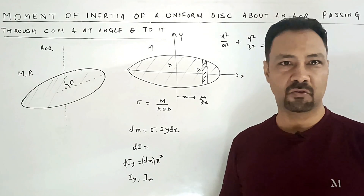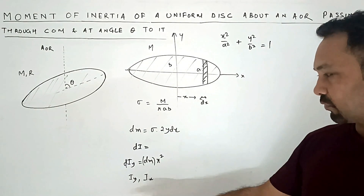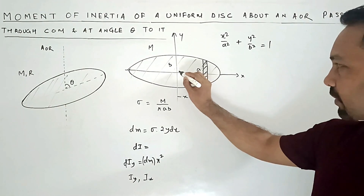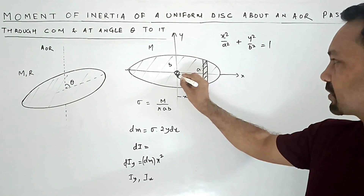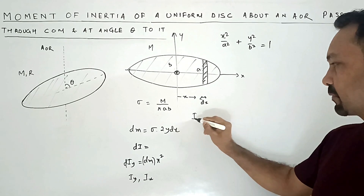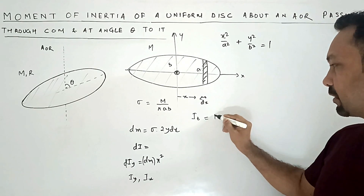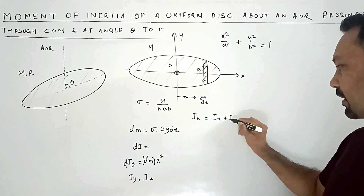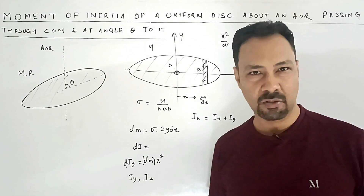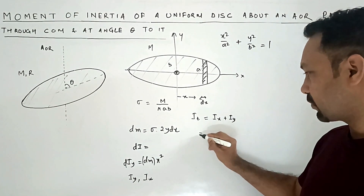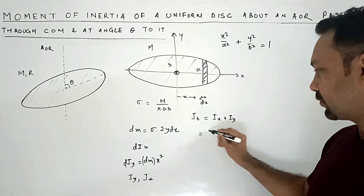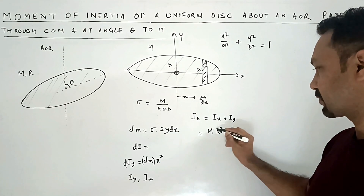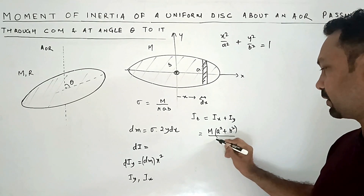To get Ix from Iy, you simply exchange a and b. Then to find the moment of inertia about the z-axis — Iz — we apply the perpendicular axis theorem: Iz = Ix + Iy, and doing all those calculations we finally arrive at the expression Iz = M(a² + b²)/4.